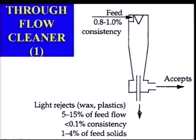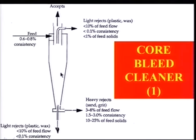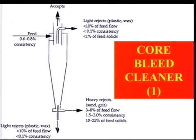The core bleed cleaner removes both high-density and low-density contaminants in a single unit. The feed swirls around, high-density material is removed through the underflow, and the remaining pulp swirls back up with low-density material concentrating near the center and removed through the core. The accepts exit through the annular tube as clean fiber, devoid of both low-density and high-density contaminants.